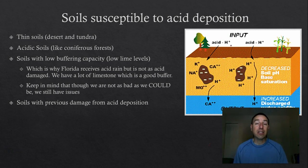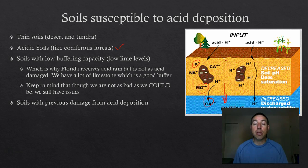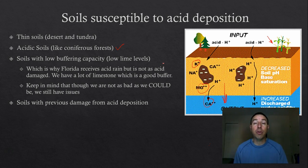When acid deposition falls on soils — especially already acidic soils like coniferous forests and taiga — we start to lose potassium, calcium, and magnesium from the soil, leaching them down beyond where roots can reach, sometimes into the water table. This decreases soil pH over time, and the more the pH drops, the less crops and trees will grow. In Florida, however, we have buffers in our soils — limestone is an excellent buffer that resists pH change, so Florida doesn't have major problems with soil acidification.